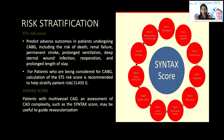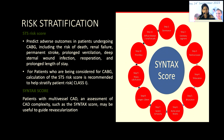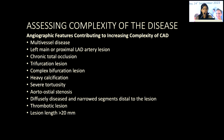The SYNTAX score has 11 variables, including coronary dominance (right or left), coronary segment involvement — proximal, mid, distal — total occlusion, bifurcation or trifurcation, ostial involvement, vessel calcification, lesion length, tortuosity, presence of thrombus, and small vessel disease. SYNTAX score I covers only anatomic complexity, whereas SYNTAX score II also incorporates patient age, frailty, and creatinine clearance, giving us predicted mortality with PCI versus CABG to aid decision-making.